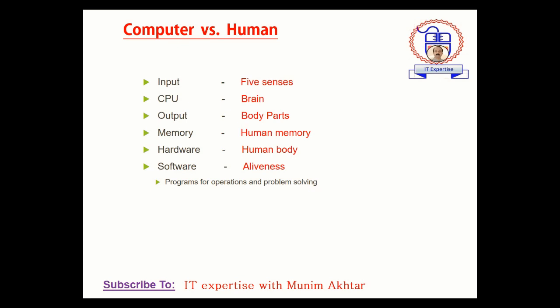Memory has two parts: RAM and ROM. RAM means Random Access Memory, which is temporary memory, and ROM is permanent memory, which you can say is the hard disk. Concerning human memory, humans also have temporary and permanent memories. Next is hardware — your system has hardware in terms of touchable items of the computer: input devices, output devices, the black box. Concerning humans, the human body is the hardware.